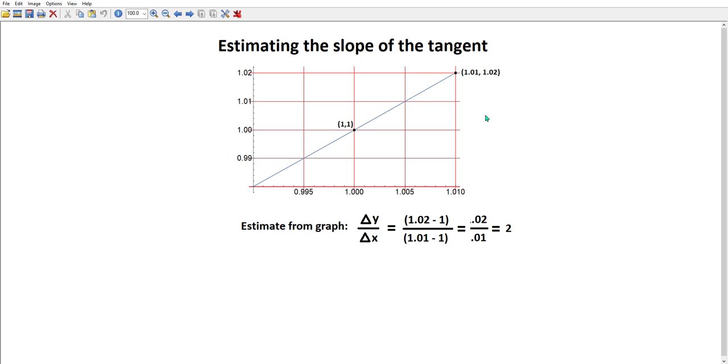Now, it turns out we know what this function is, it's y equals x squared. So in fact, using the formula y equals x squared, when x equals 1.01, y is actually 1.01 squared, which if you calculate it is 1.0201.